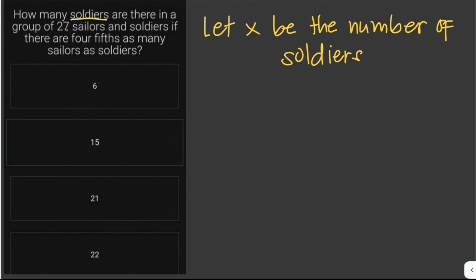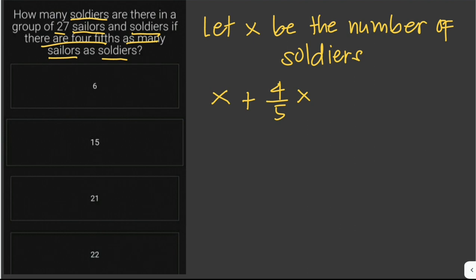It is given that the sum of the sailors and soldiers is equal to 27. It is also stated that there are four-fifths as many sailors as soldiers. We can write this as a mathematical equation: x (the number of soldiers) plus four-fifths x (the number of sailors) equals 27.